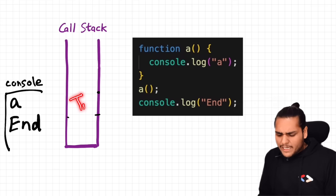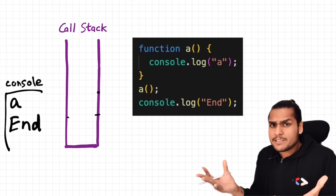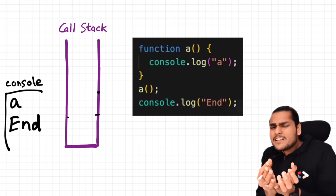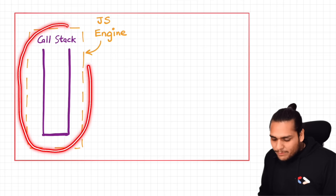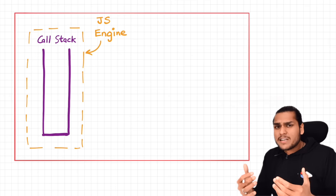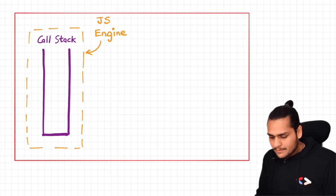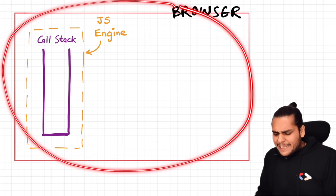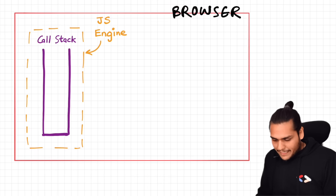So suppose if we have to keep track of time and execute some piece of code after a certain delay, we will need some extra superpowers — the superpowers of timers. This call stack is inside the JavaScript engine, and this JavaScript engine is inside a big red box. What is this red box? Yes, it is the browser. This browser overall has the JavaScript engine in it, and this JavaScript engine has a call stack, and here our program runs.